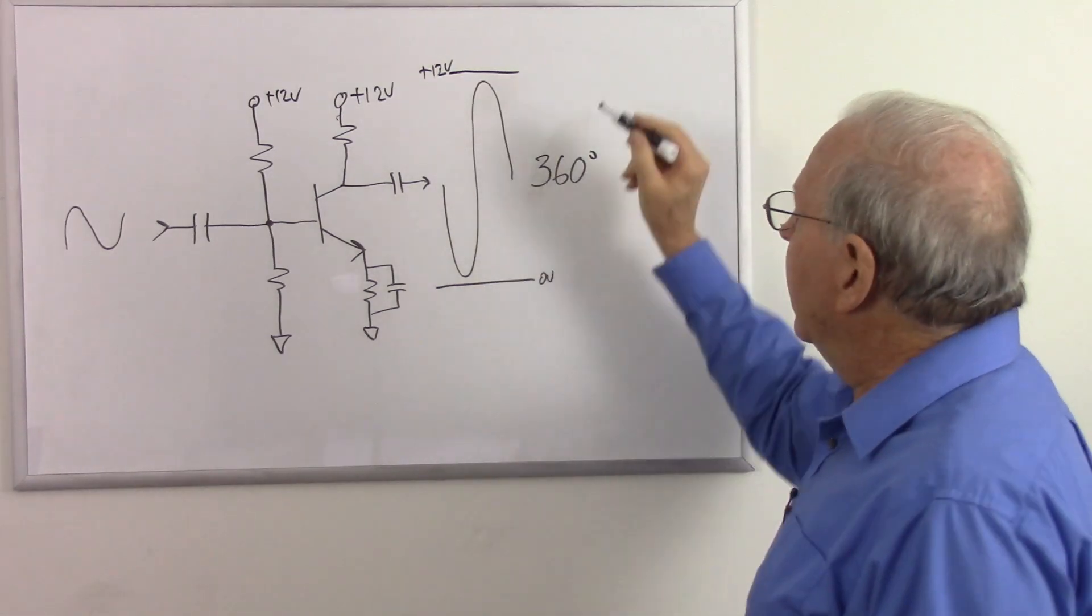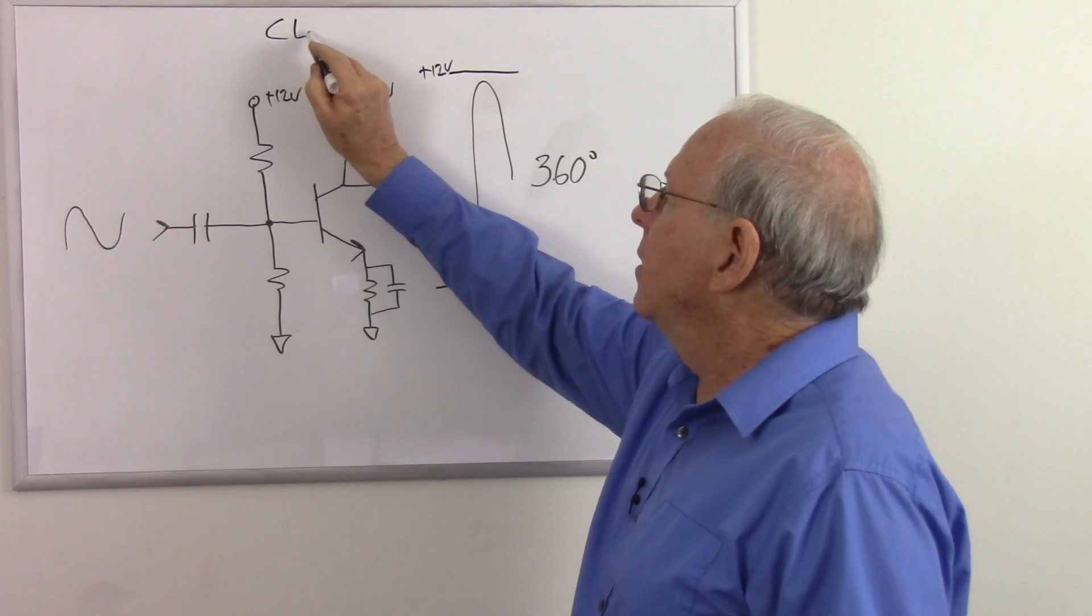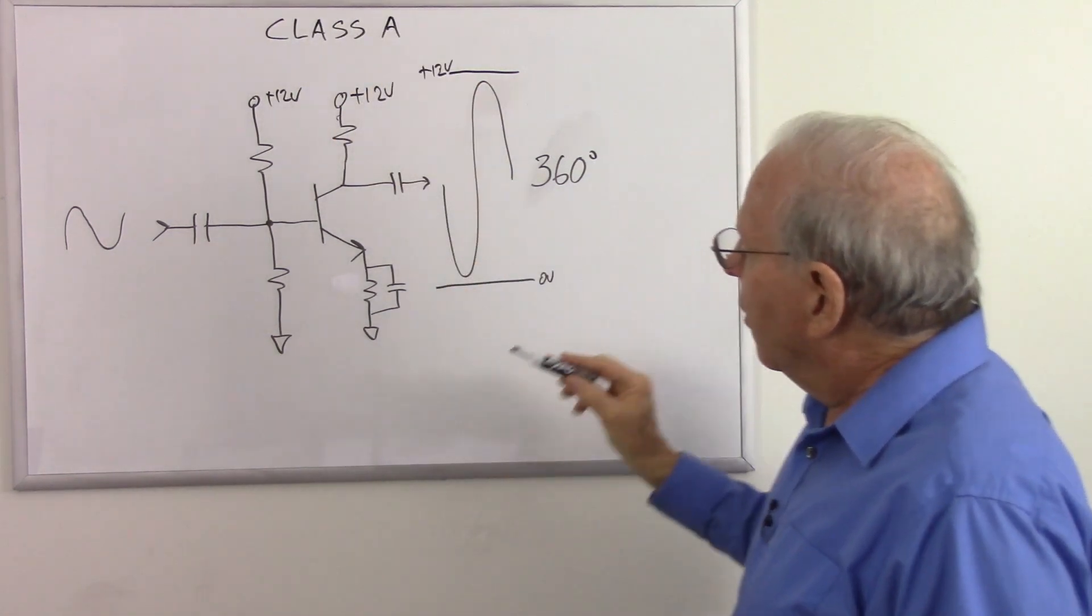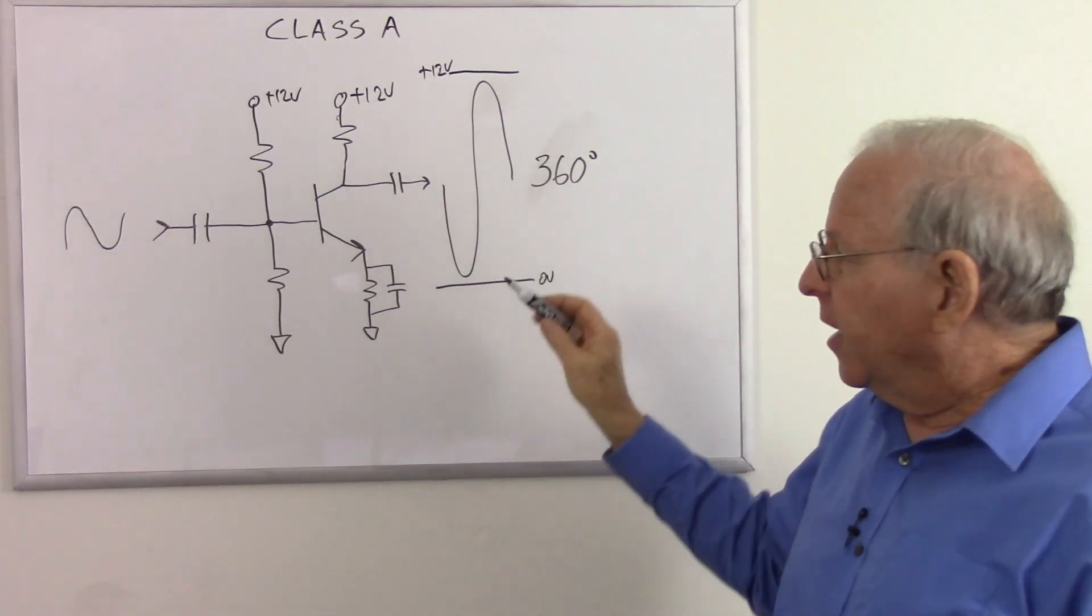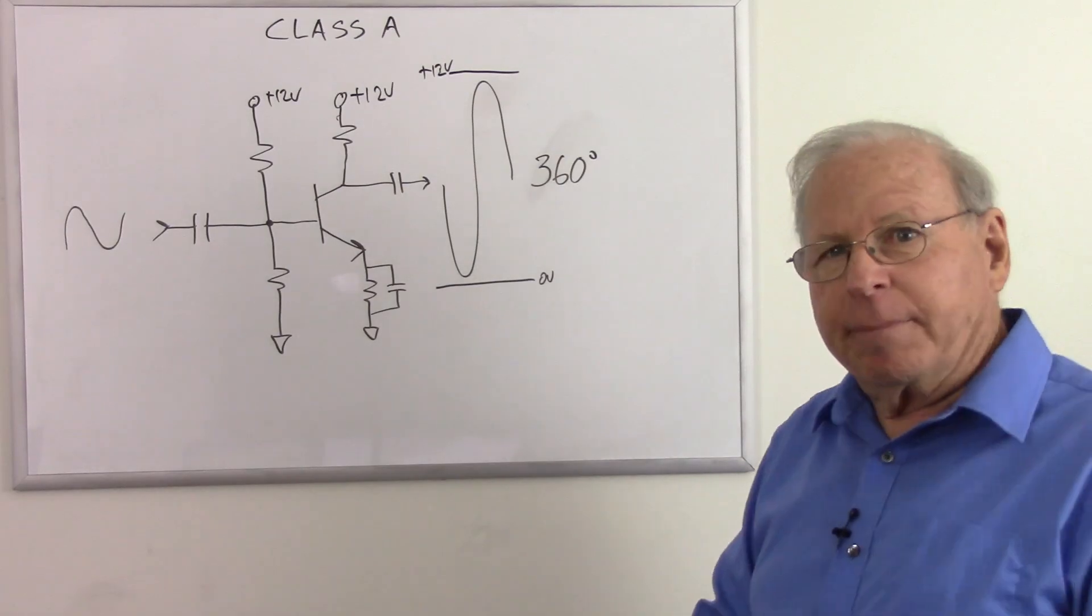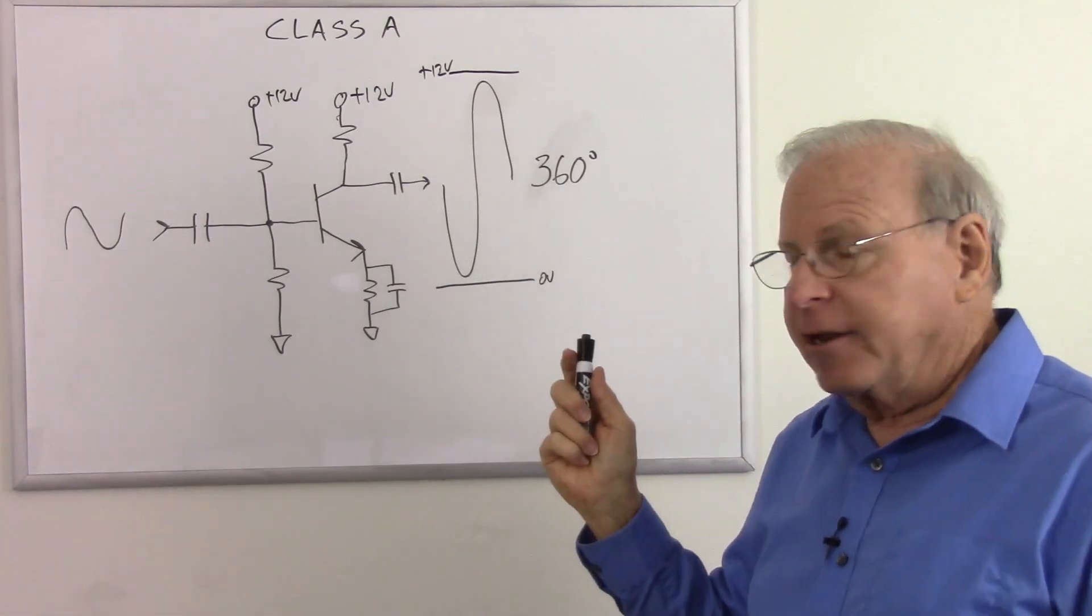So this is going to be amplifying a full 360 degrees of our sine wave. And we call this a Class A amplifier. So by definition, a Class A amplifier will amplify all 360 degrees of the sine wave. Now why would we want to amplify anything less? We'll talk about that in a moment.